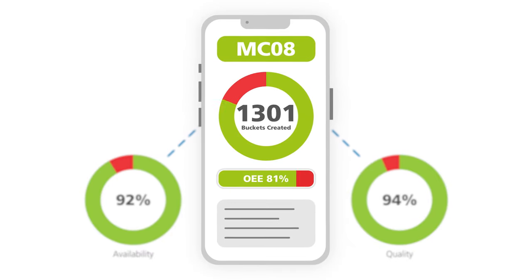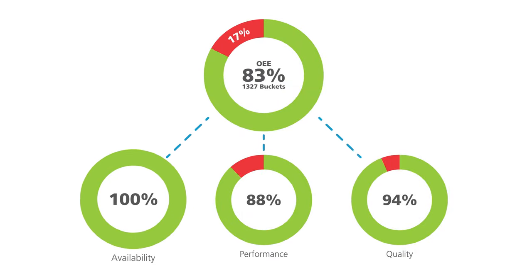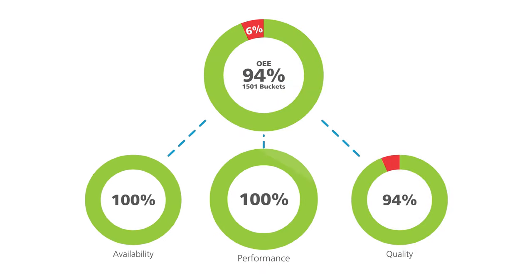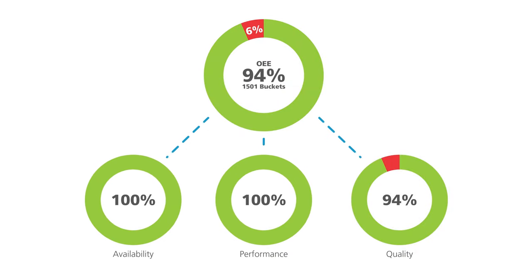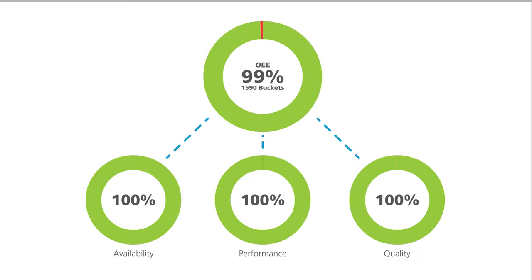An OEE figure of 100% means that your process is operating all the time, creating parts at the intended rate and producing only good parts.